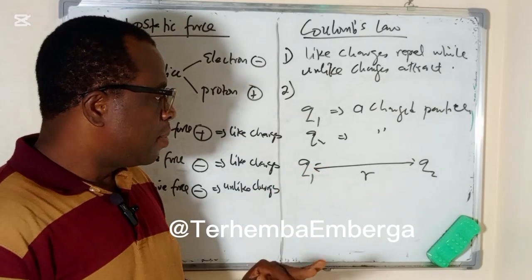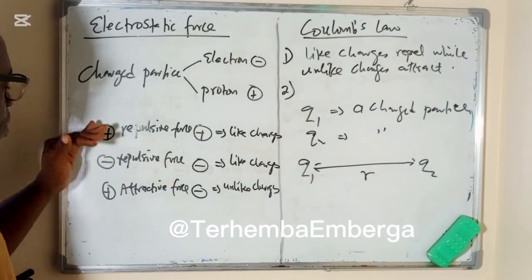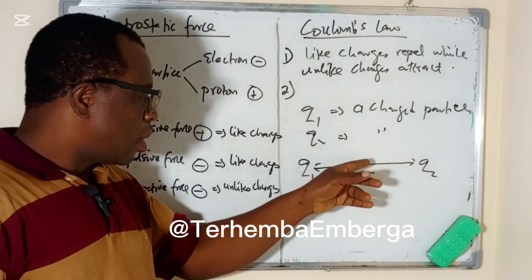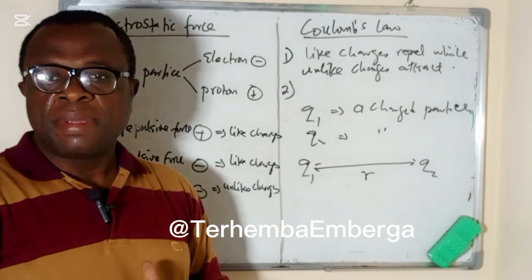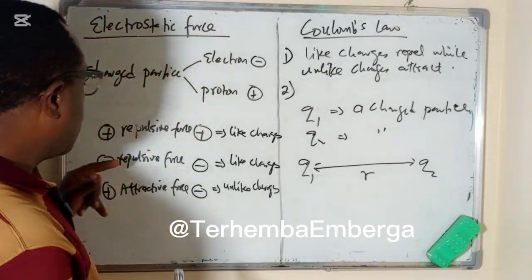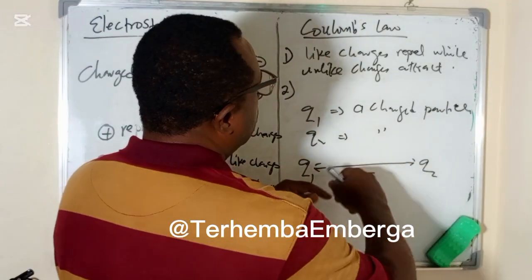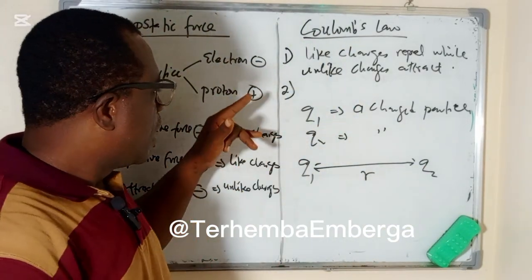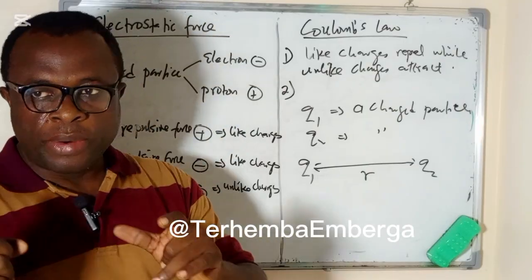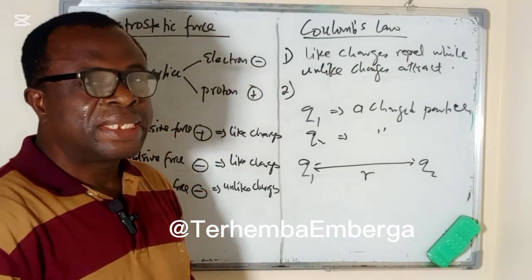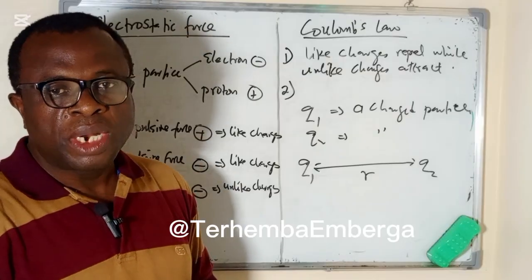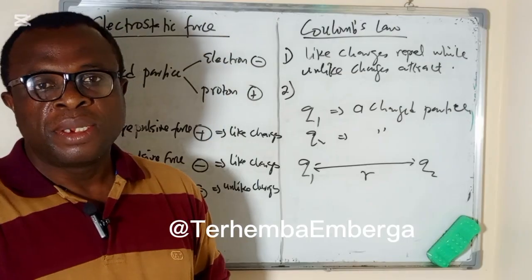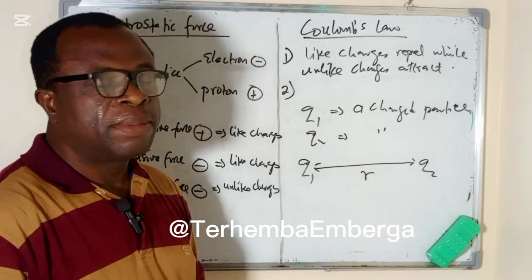If they are like charges, what exists between them is a repulsive force. But if they are unlike charges, the force between them would be an attractive force. So Coulomb states that the force of attraction or repulsion between two given charges is directly proportional to the product of the two charges and inversely proportional to the square of the distance separating them.